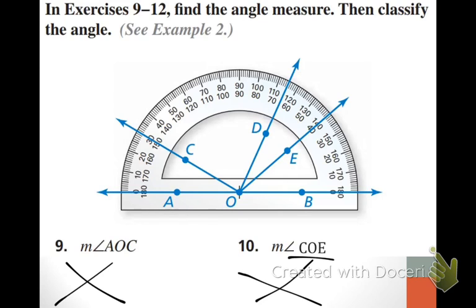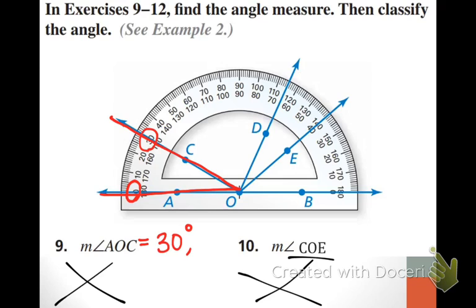We're going to use this protractor. It says find the angle measure, then classify the angle. We can start with AOC — from A to O to C. Is one of these rays sitting at zero? Yes, on the top row. So if I'm reading zero on the top row, I need to read the other ray on the top row as well, which is 30. So AOC is 30 degrees, which is an acute angle.